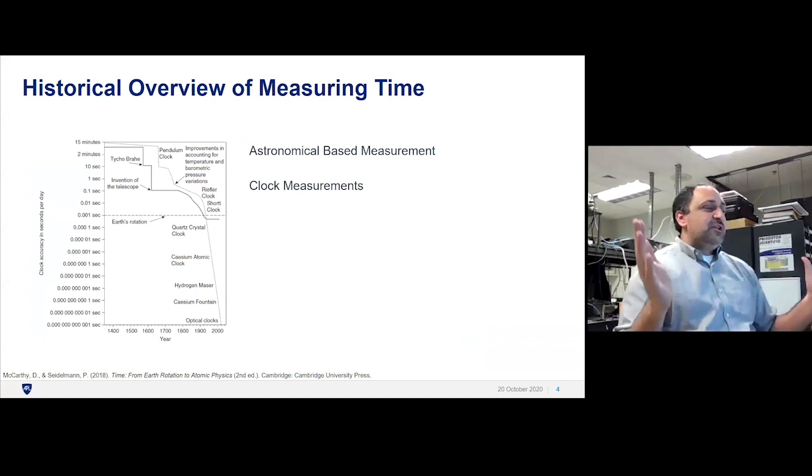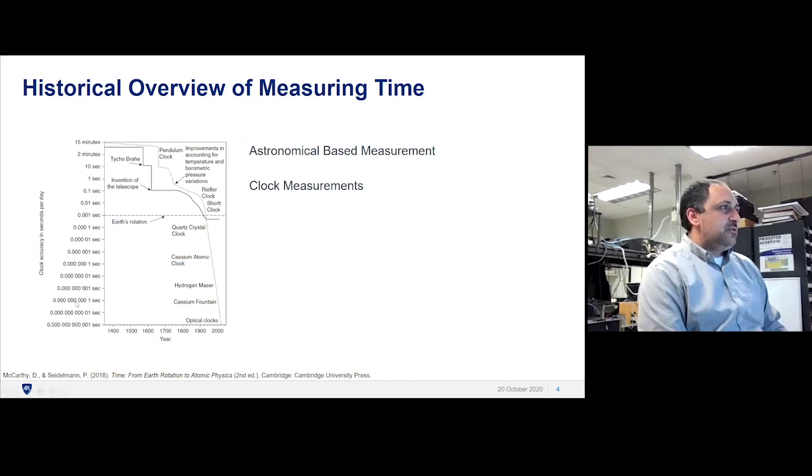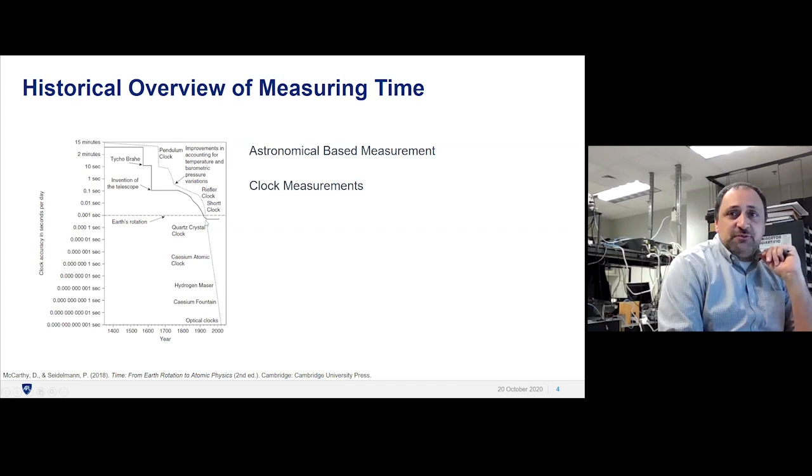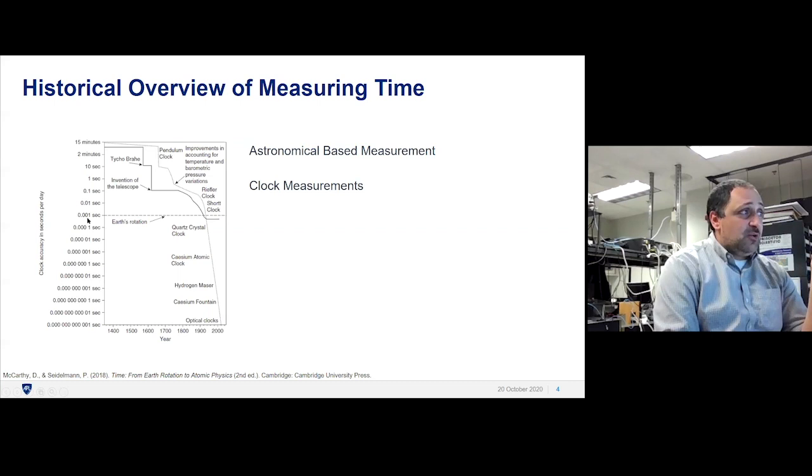Our historical overview of measuring time. On this chart, we have the clock accuracy or the timekeeping accuracy, going all the way to nanopicoseconds. For scale, the creators put in the accuracy you get over one day using Earth's rotation. If you were to use that as your clock, once a day you'd lose a millisecond or a thousandth of a second.